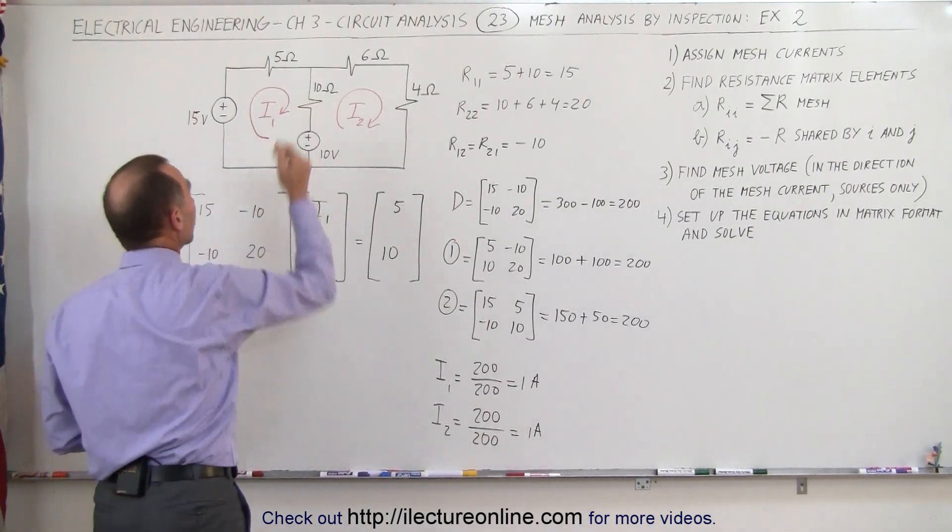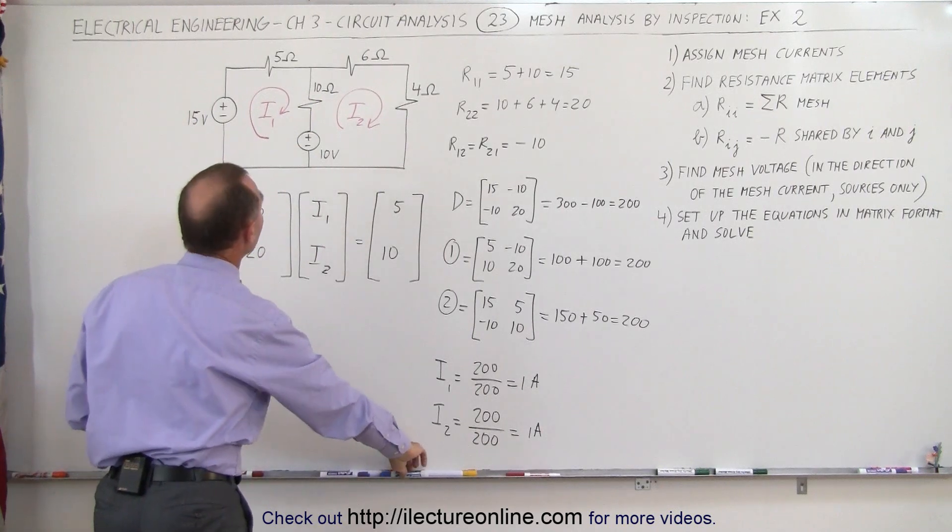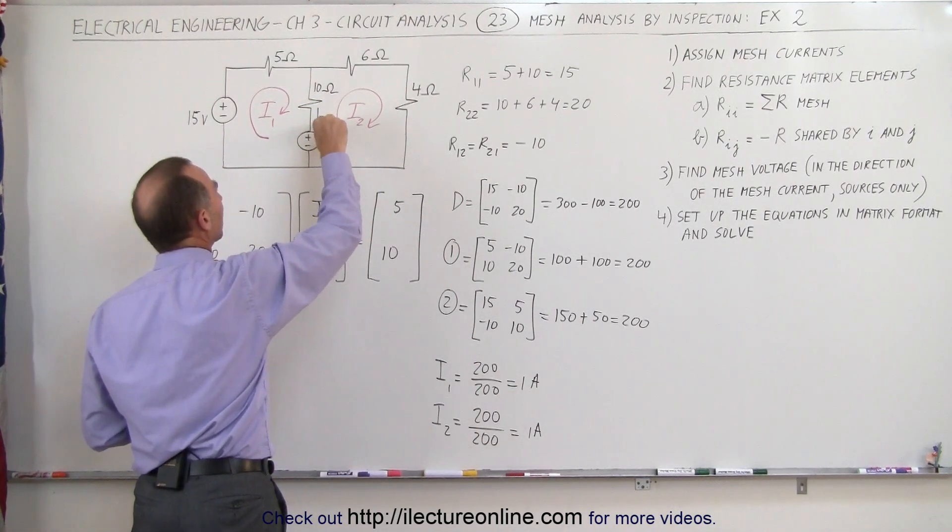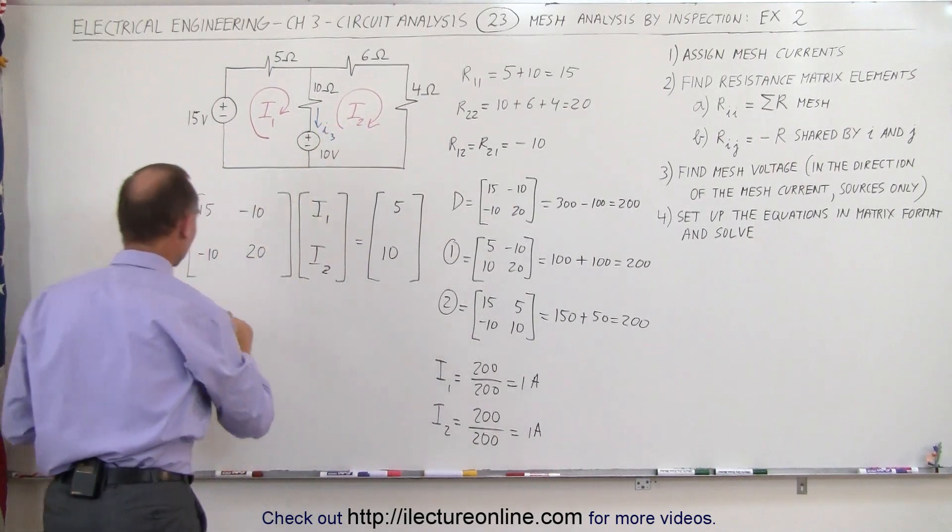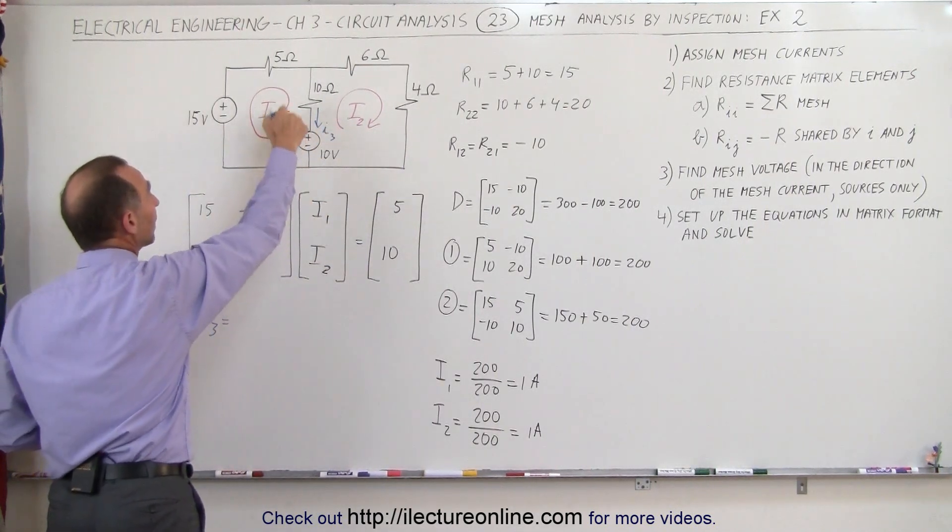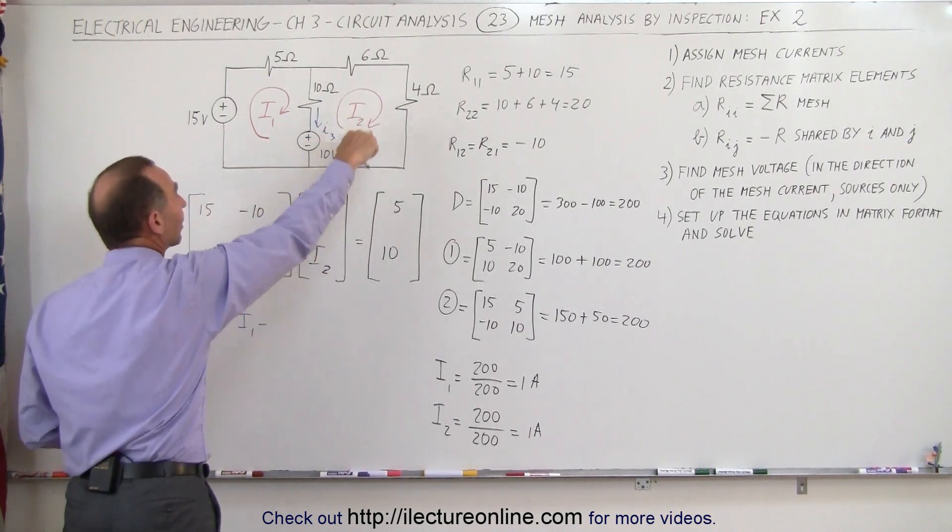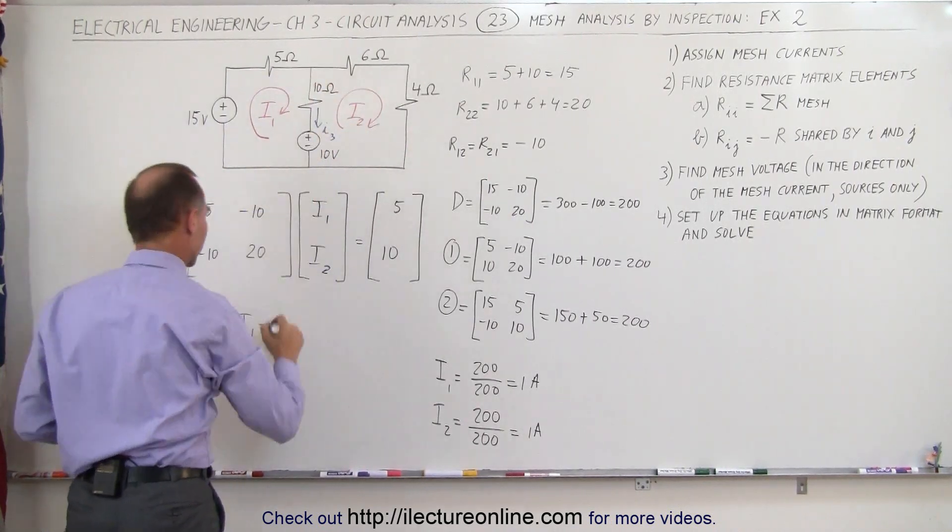Now what will be the current through the 10 ohm resistor? Well, let's find out, assuming that it's in this direction. Call it I3. We can then say that I3 is equal to I1, because I1 is in the same direction as I3, minus I2, because I2 is in the opposite direction.